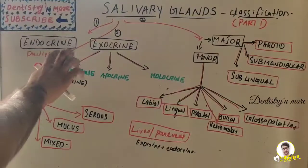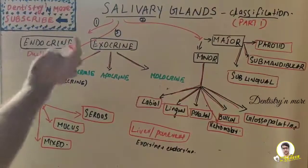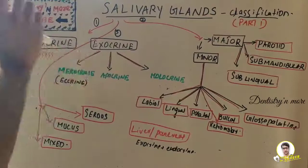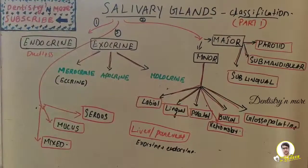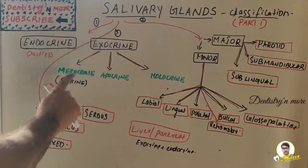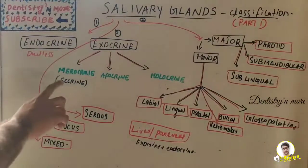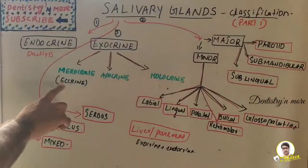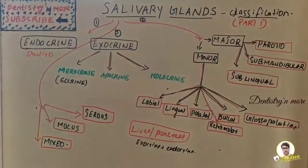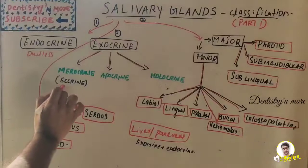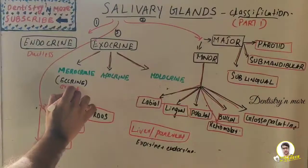So the basic difference is that endocrine glands don't have any duct, whereas exocrine glands are ducted glands. Exocrine glands are further classified into merocrine, apocrine, and holocrine. The first one — merocrine glands — are also known as eccrine glands. Their cells secrete substances by a process known as exocytosis.